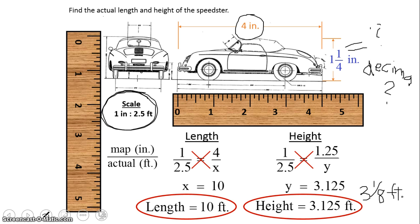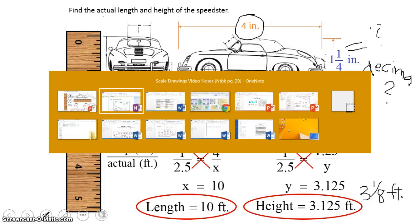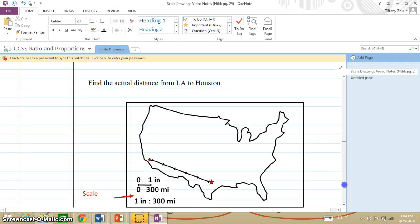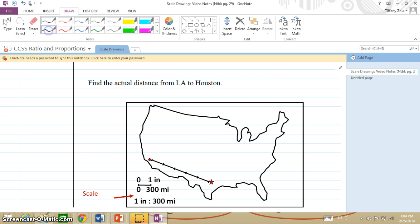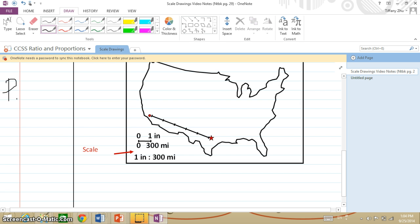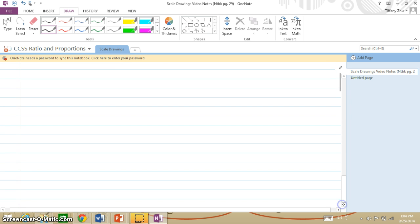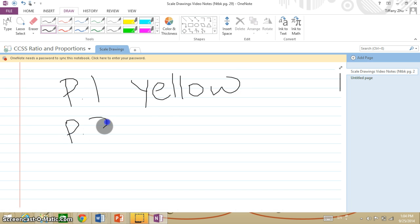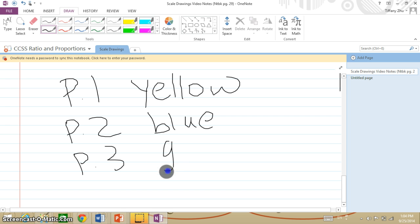Tomorrow in class, let me give you the secret code here. Our secret code for period 1 is going to be yellow. Then we're going to do period 2 is blue. Period 3 is green. And period 5 is going to be black.